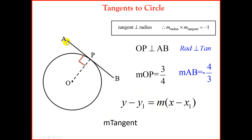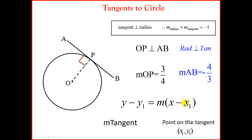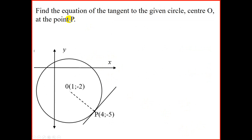We have three points on the tangent: A, P, and B. It depends which point is given, and most of the time we will be given point P, which is our x1, y1, and that goes into the formula. Let's look at our first example.